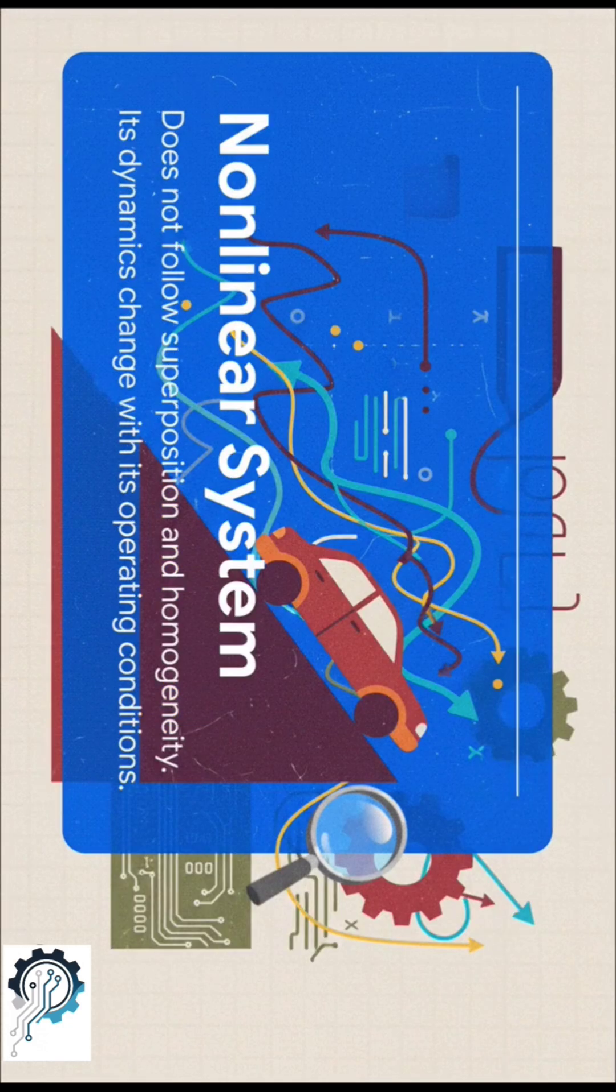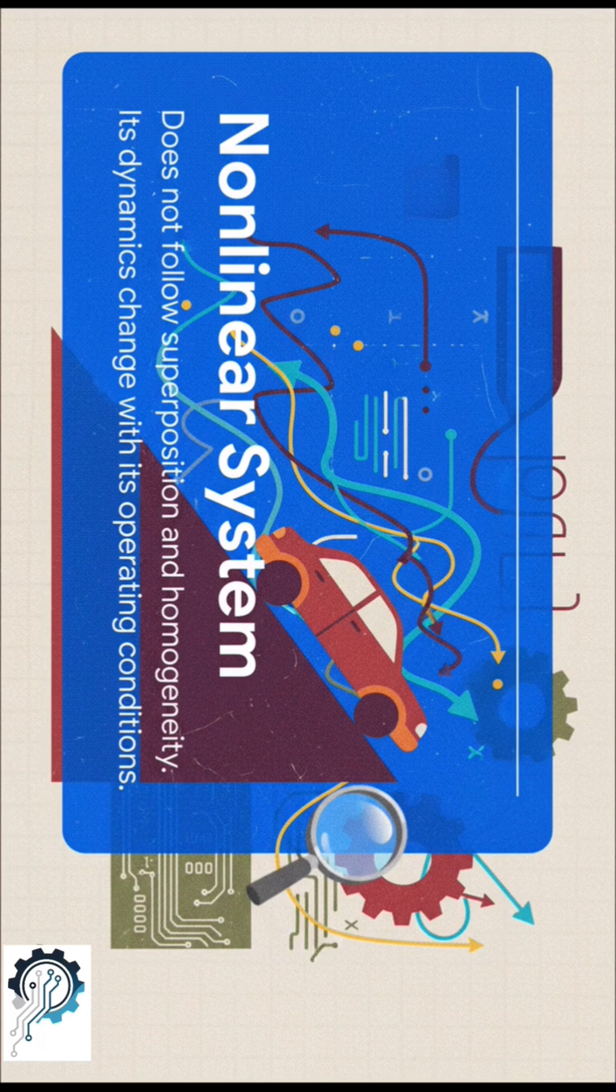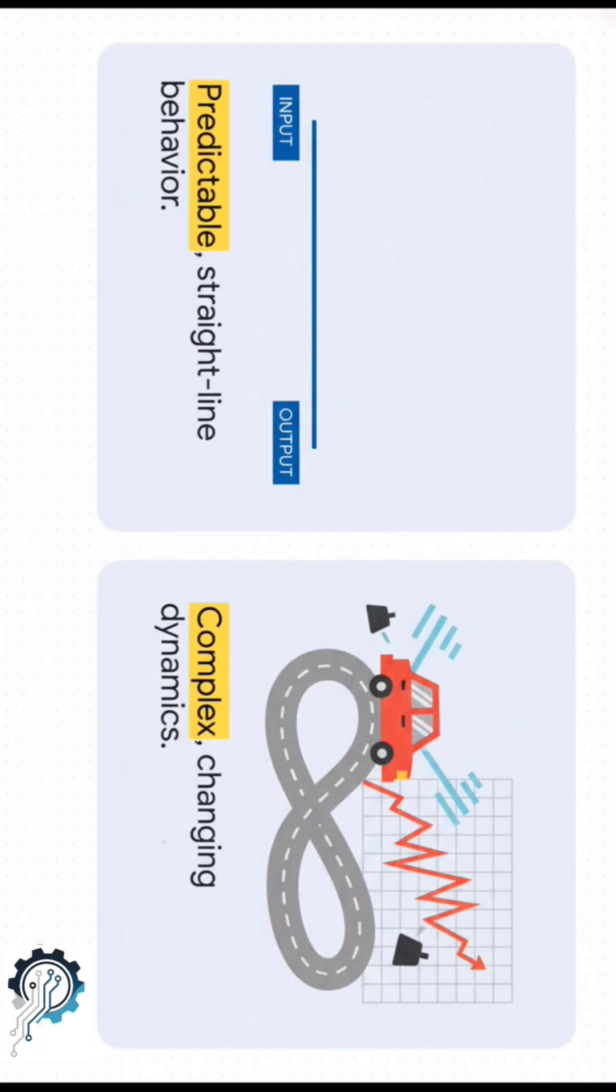But a car? Nope. Its behavior completely changes with speed, the incline, or even its weight. So that's the core of it: predictable, simple theory versus complex, ever-changing reality.